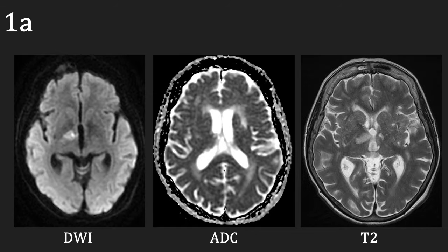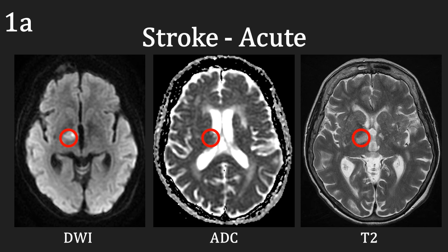Now on to some cases so we can put this knowledge into action. Our first case is of a 77-year-old female patient who presented with an unresponsive episode, preceding drowsiness, left-sided facial droop, and slurred speech. She is known to have had a previous stroke and is on medications for hypertension. On the DWI sequence, we can see an area of high signal in the right thalamus, with low signal on the ADC and which is matched with the high signal on the T2. This represents an acute infarct or stroke.